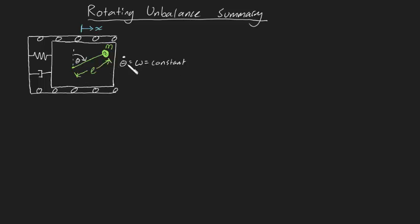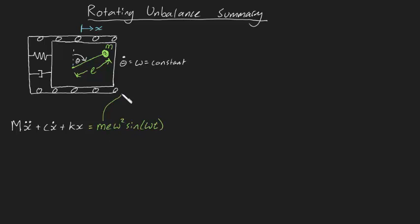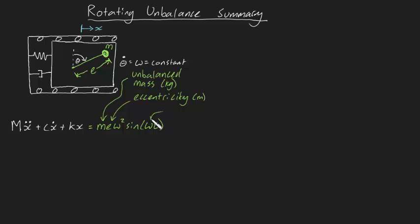then the equation of motion for the block becomes: capital M x-double-dot plus C x-dot plus K x equals m e omega squared sine omega t, where m is the unbalanced mass in kilograms, e is the eccentricity in meters, omega is the angular velocity of the rotating mass in radians per second, and capital M is the total mass of the system in kilograms.